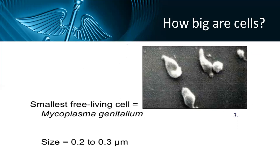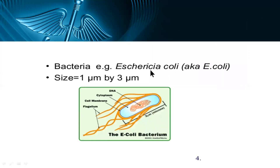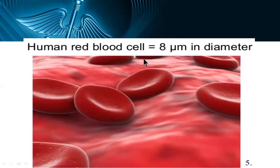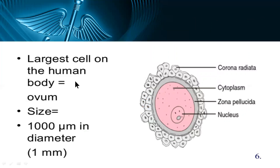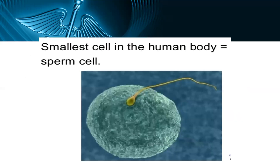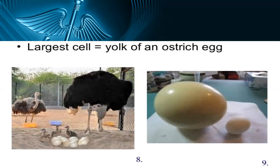How big are cells? The smallest known living cell is Mycoplasma genitalium, with a size of 0.2 to 0.3 microns. The bacterium E. coli is 1 to 3 microns in size. Human red blood cells are 8 microns in diameter. The largest cell in the human body is the ovum, 100 microns in diameter, which is equal to 1 millimeter. The smallest cell in the human body is the sperm cell. The largest cell overall is the yolk of an ostrich egg.